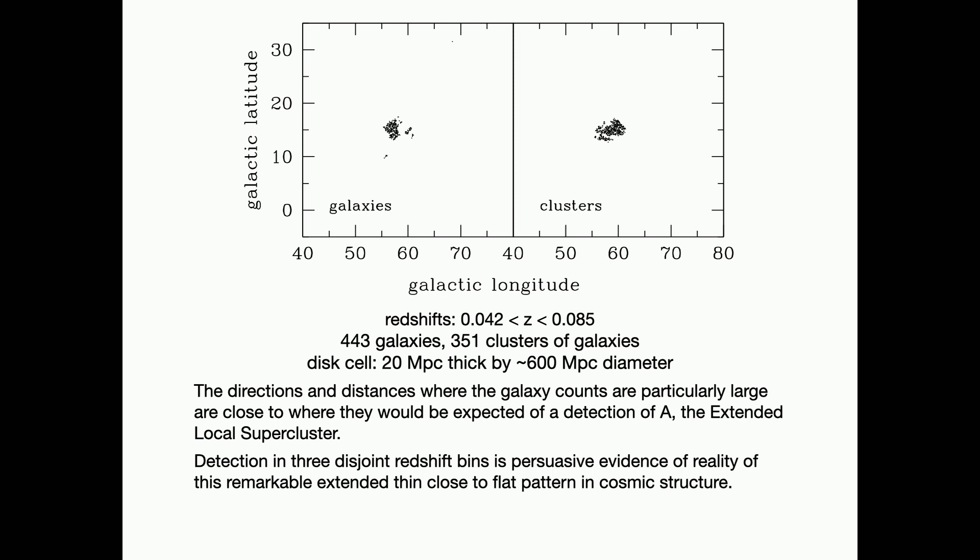I double again the range of distance in order to have reasonable counts in cells. I double the cell size. It's now 20 megaparsecs thick and 600 megaparsecs diameter. And then you look around, and you see, for galaxies, this concentration of points. It's detected again. And clusters, there's enough of them that you can try the same game, and they're detected too. So, we have detection in three independent samples of the same sheet A. That means, I think, very compelling evidence that this is a real pattern in cosmic structure.